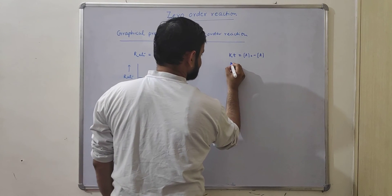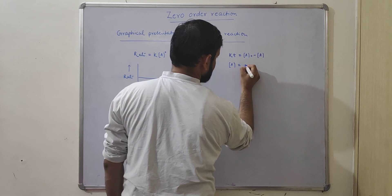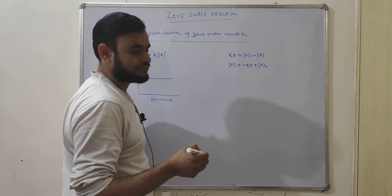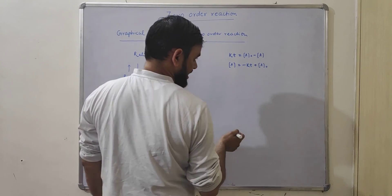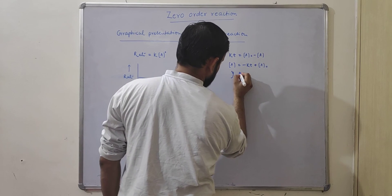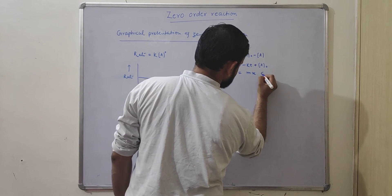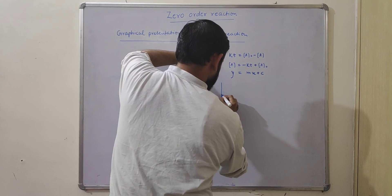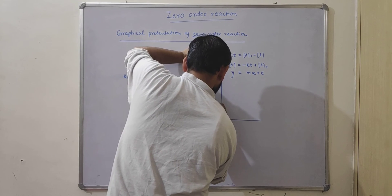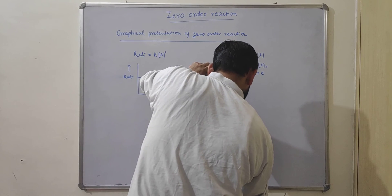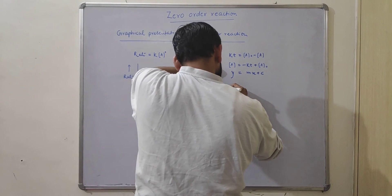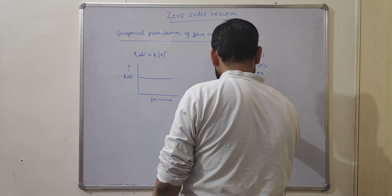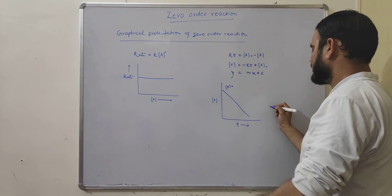The integrated form of the equation for zero-order reaction is Kt = A₀ − A, or equivalently A = −Kt + A₀. Comparing this with the straight-line equation Y = mX + C, if we plot concentration A against time T, we will get a straight line with a negative slope, where the intercept equals A₀ and the slope equals −k.